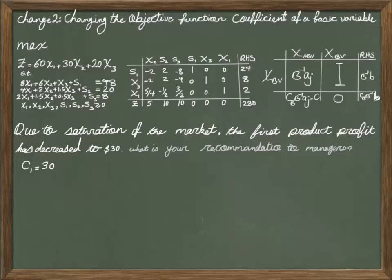The objective function coefficient of X1 has changed from $60 to $30, and we want to know how this optimal solution is going to change. We have the set of basic variables here, and we know that X1 is a basic variable.